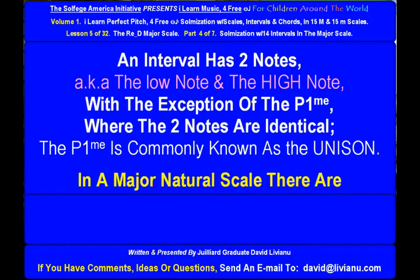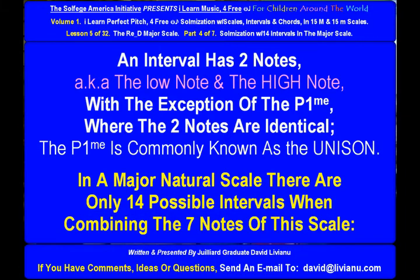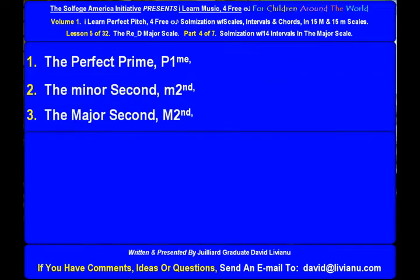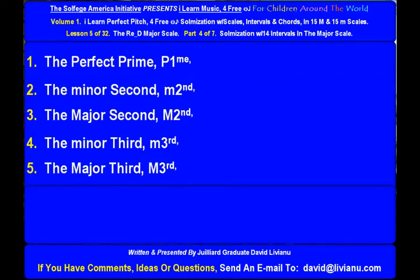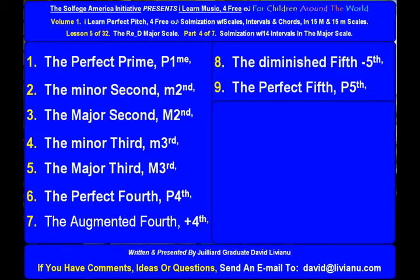In a major natural scale, there are only 14 possible intervals when combining the seven notes of this scale: the perfect prime, the minor second, the major second, the minor third, the major third, the perfect fourth, the augmented fourth, the diminished fifth.